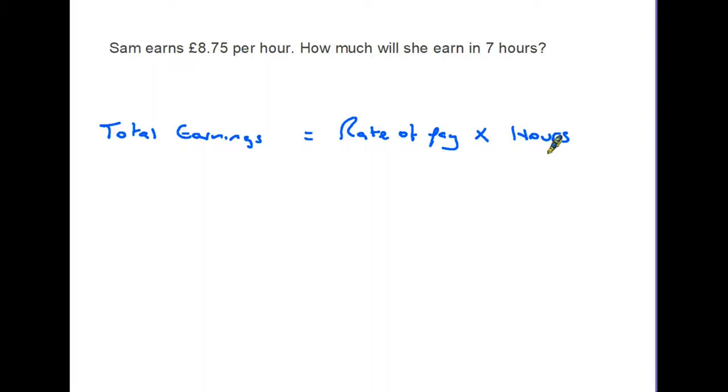So the formula is hidden in the words. So what's her rate of pay in this case? Well it's £8.75 an hour and she's working seven hours. So her total pay will be £61.25. So working out the formula, the rule, has allowed us to answer the question.